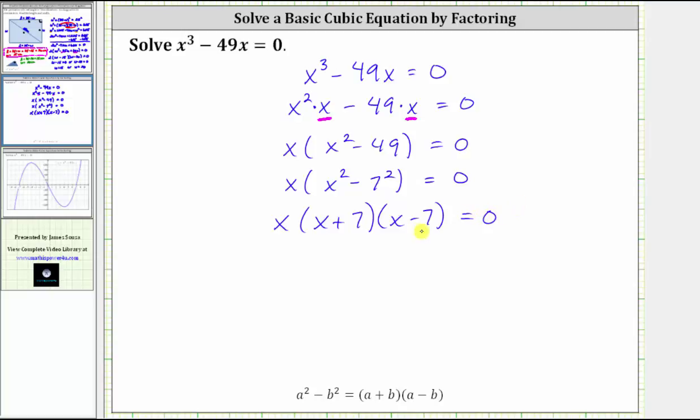Now that we have the left side of the equation factored completely, and the right side is equal to zero, the product on the left must equal zero, and this product is equal to zero if x equals zero, or x plus seven equals zero, or x minus seven equals zero. And this is called the zero product property.